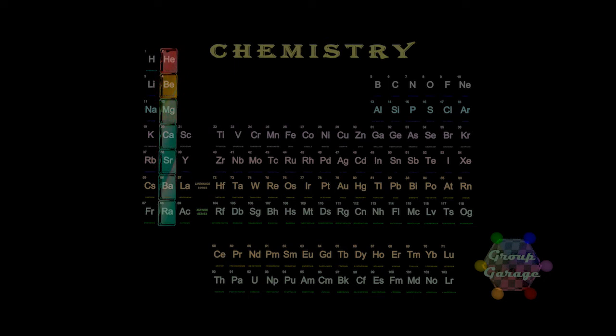Remember, each period is a new principal energy level. n equals 1, n equals 2, n equals 3, n equals 4, n equals 5, n equals 6, n equals 7. And the first two elements are in the s orbital.